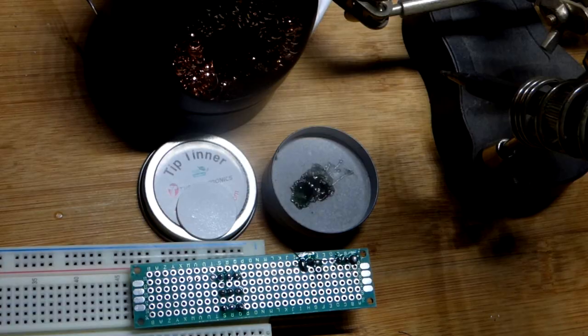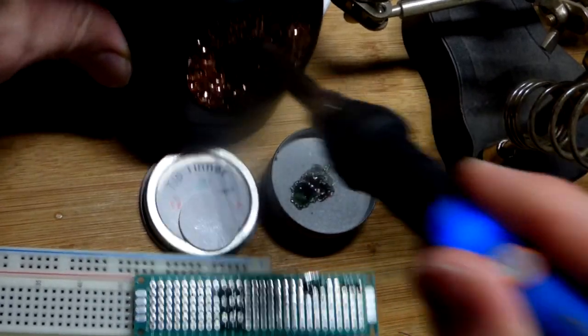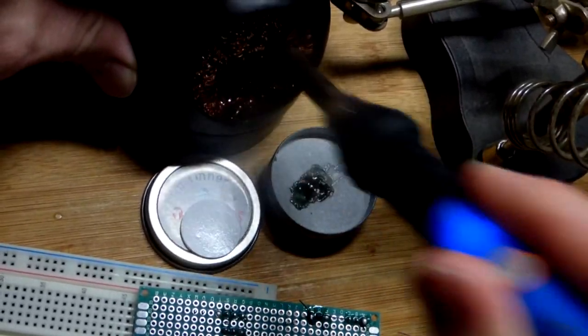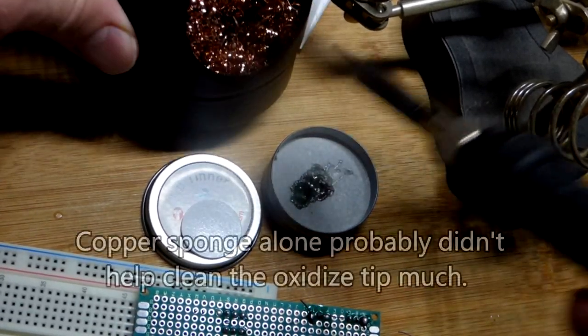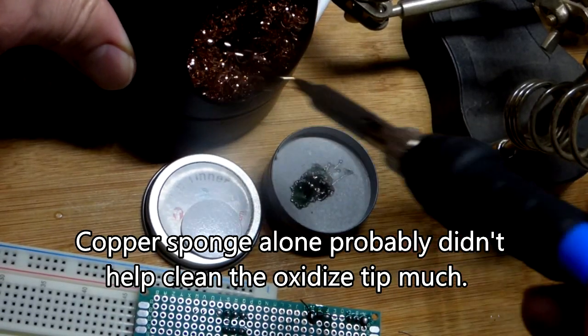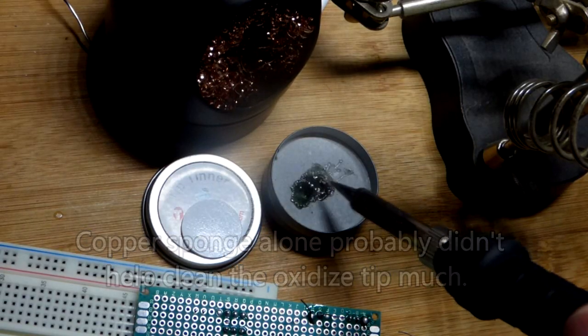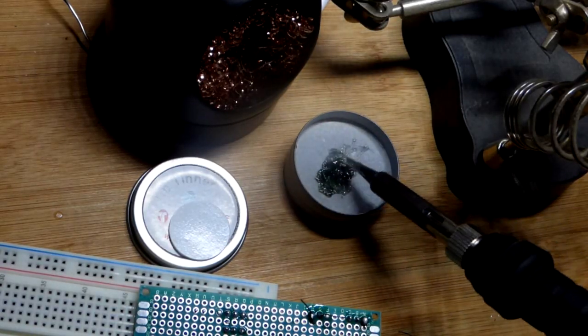But I think you're supposed to clean it off before you solder. So I got this metal sponge, which it's not something I normally use. Apparently whatever you're cleaning off of here ends up falling down to the bottom right there. But yeah, you can just do that vigorously and then I got the tip tinner.